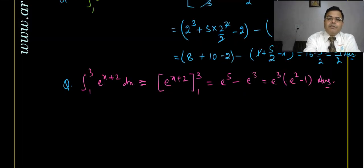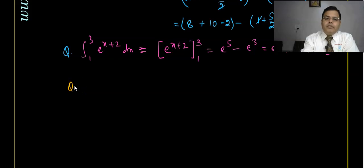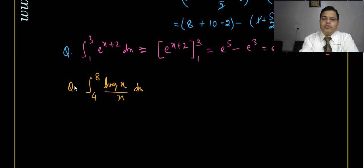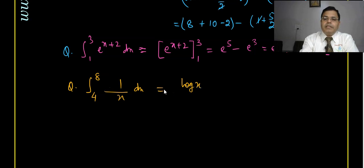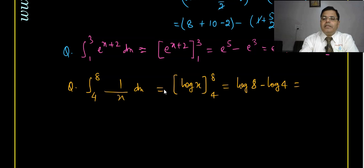Another example: ∫(4 to 8) (1/x) dx. The integration of 1/x is log x. So we get log 8 − log 4. Using log m − log n = log(m/n), this gives log(8/4) = log 2. So the answer is log 2.